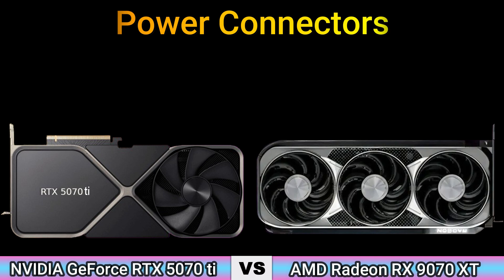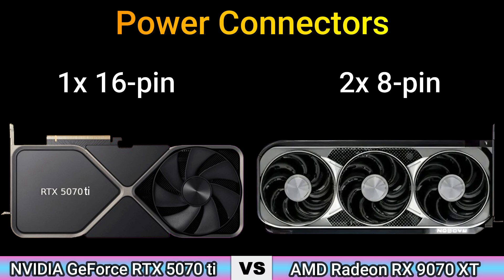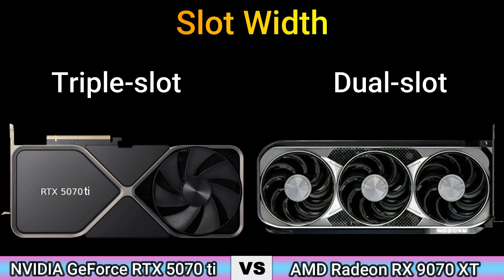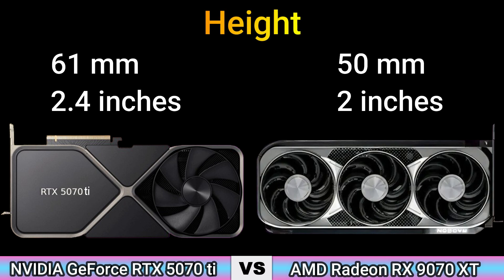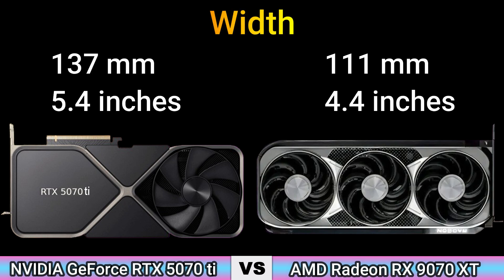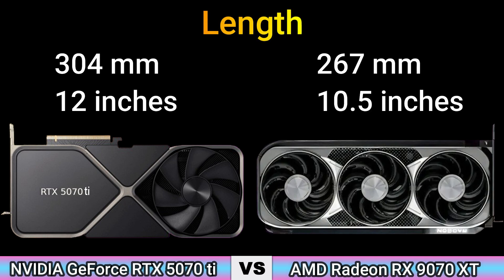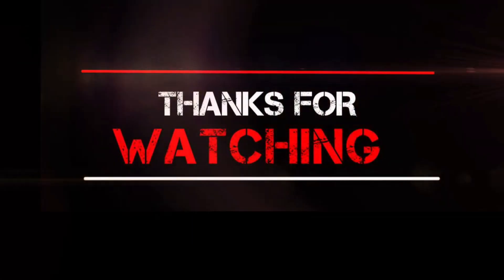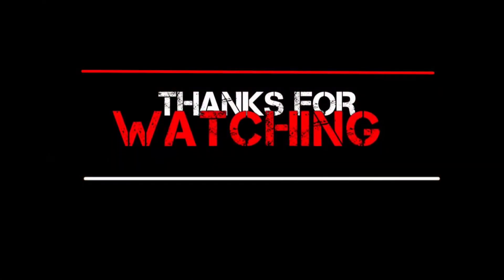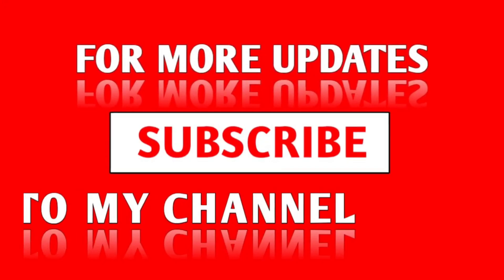Power connectors: 1x 16-pin and 2x 8-pin. Slot width: triple slot and dual slot. Height: 2.4 inch and 2 inch. Width: 5.4 inch and 4.4 inch. Length: 12 inch and 10.5 inch. Thanks for watching — for more updates, subscribe to my channel.